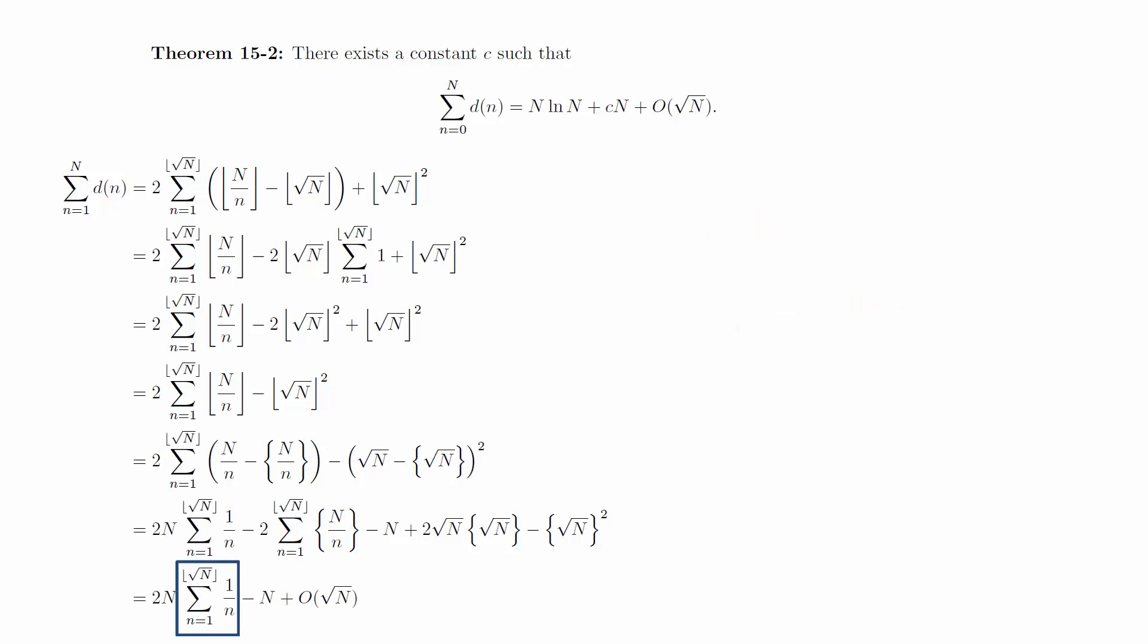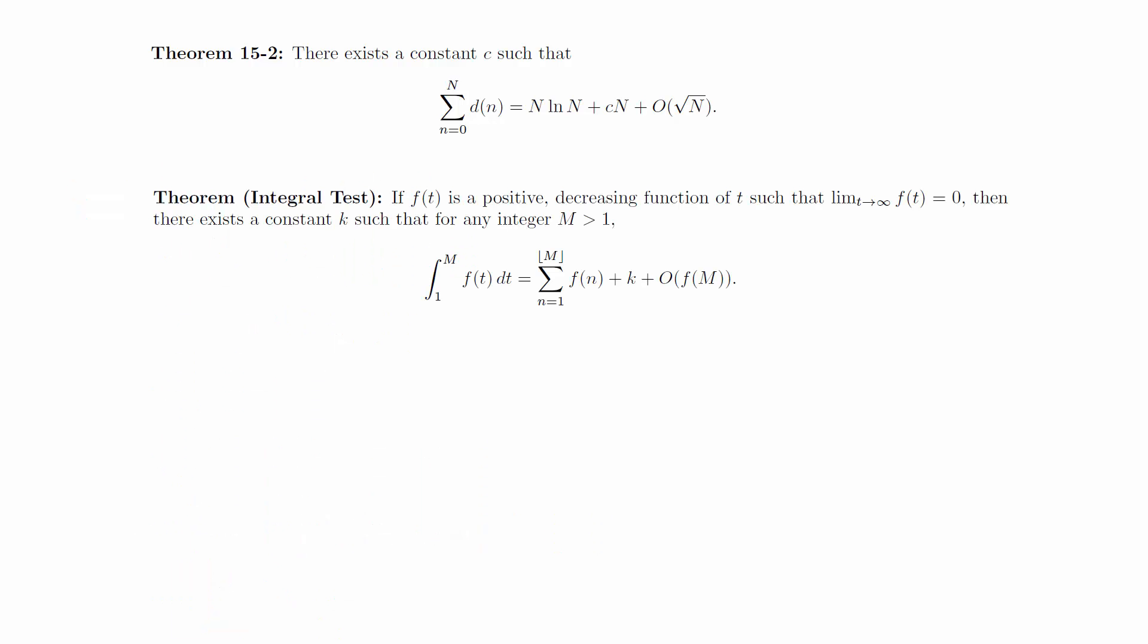In order to estimate the sum, we will use a result from calculus. The book proves this in the appendix if you want to go through the details. For our application, we will first rearrange the equation and then use f of t equals 1 over t and capital M equals square root of n.